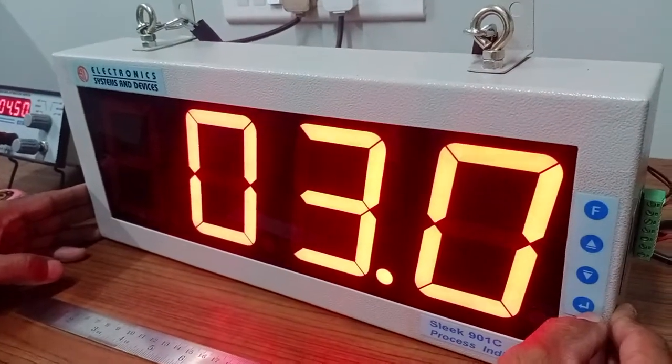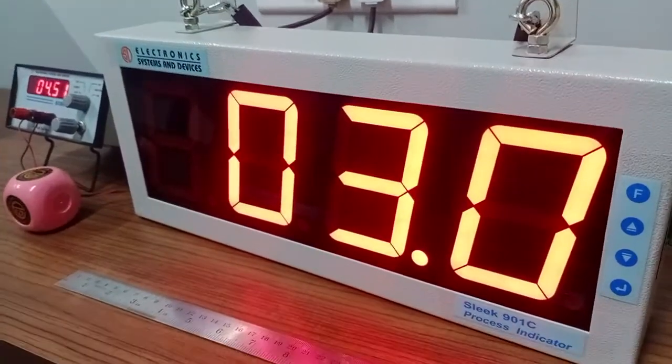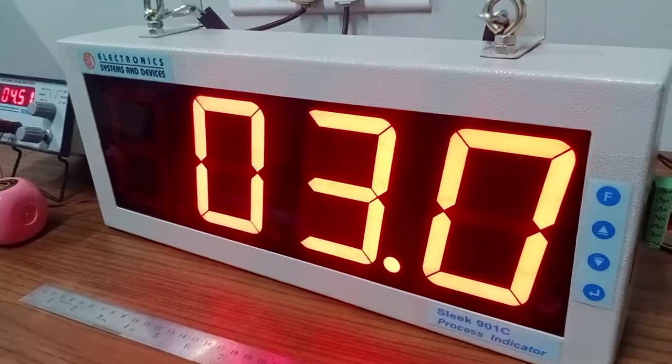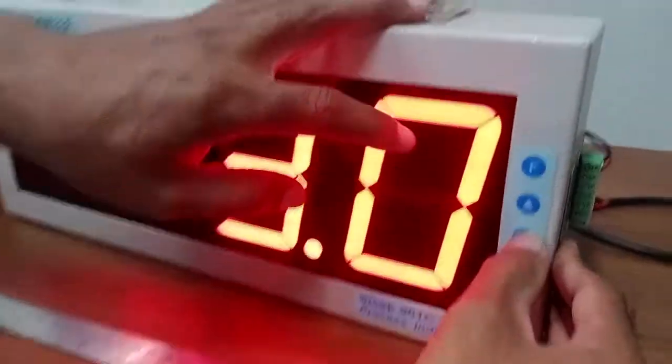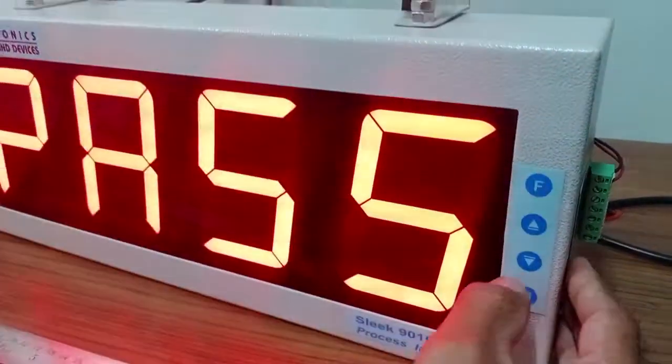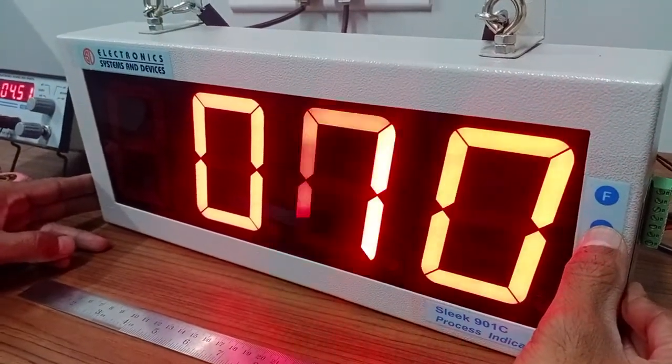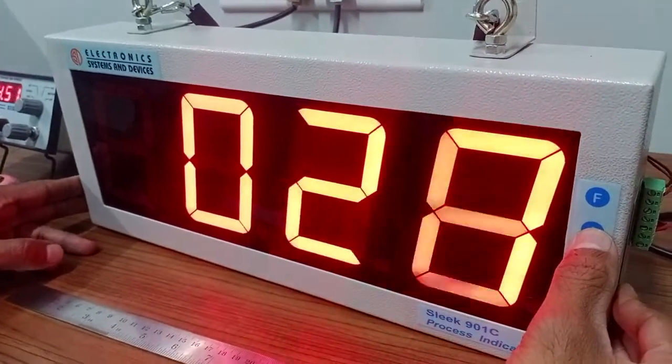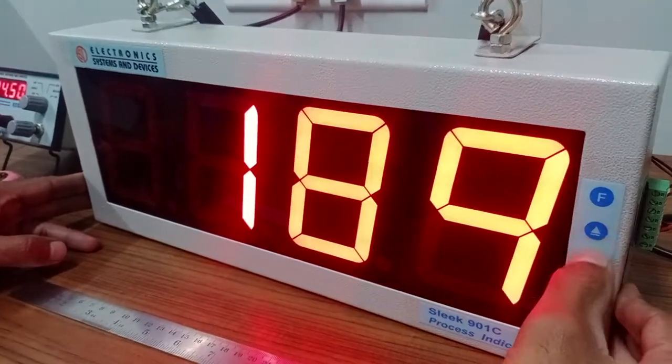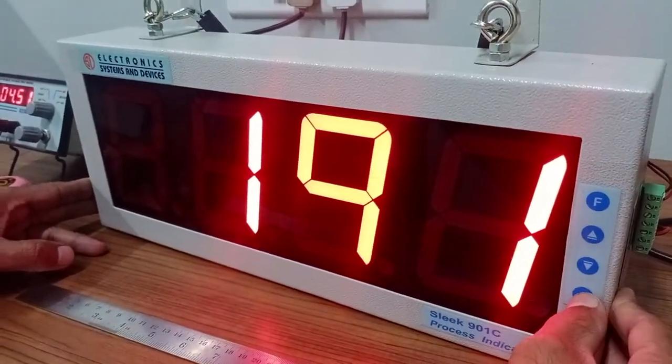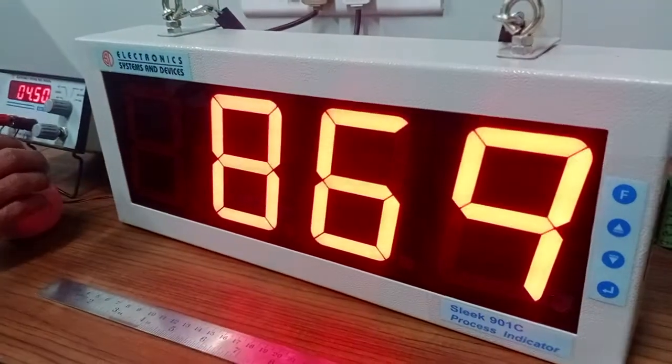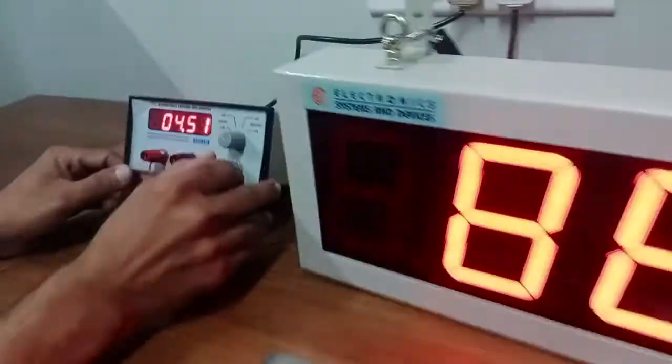Okay, we'll see the calibration mode for this. For calibration, you have to press the decrement key and then press the function key. It will ask for the password. The default password is 191 for calibration. You press enter, it will give a write message.